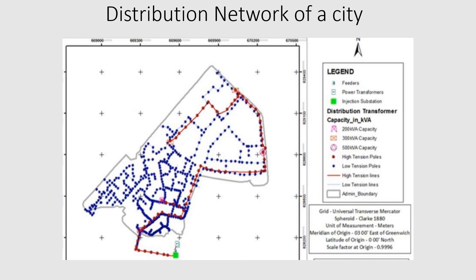This is a typical distribution network of a city. The blue poles are low-tension poles and the red ones are high-tension poles. If a small solar or wind power plant wants to connect to the nearest grid, they will request the distribution company for a grant of connectivity. The company will check all these small substations and feeders for any available injection capability, and if available, will grant connectivity.